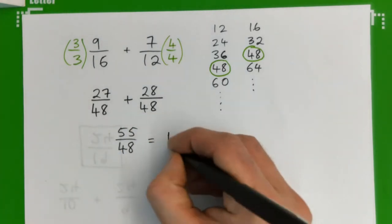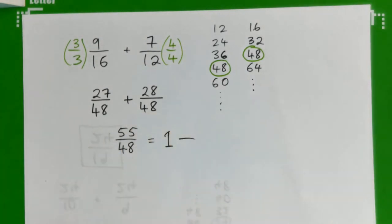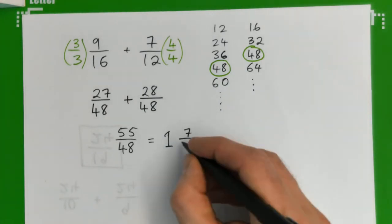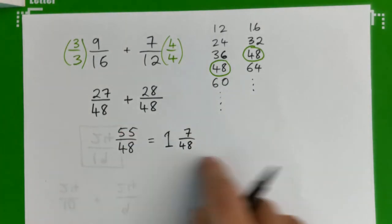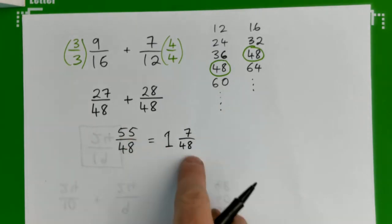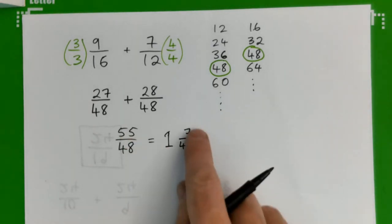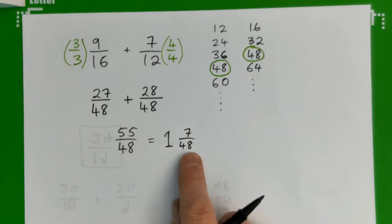48 into 55 goes one time remainder 7. So 1 and 7/48, or 55/48. Improper fraction, mixed number. And it doesn't simplify any further. 7 does not go into 48.